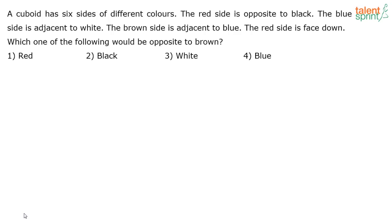A cuboid has six sides of different colors. The red side is opposite to black. The blue side is adjacent to white. The brown side is adjacent to blue. And the red side is facing down. Which one of the following would be opposite to brown?